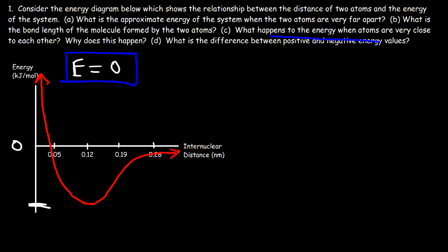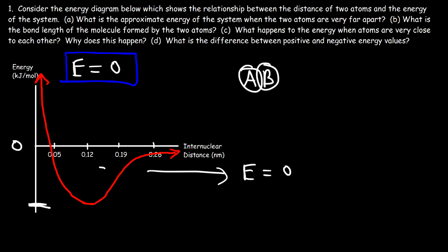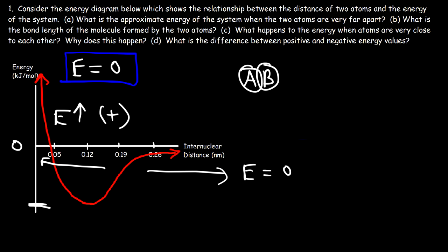Part C: what happens to the energy when atoms are very close to each other? As we move towards the left on the graph and follow the curve, notice that the energy greatly increases and becomes positive. So when the atoms are brought very close to each other, the energy of the system goes up and becomes a positive value.